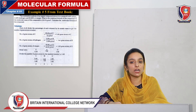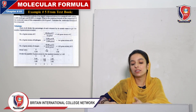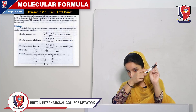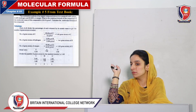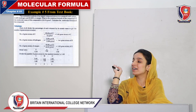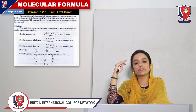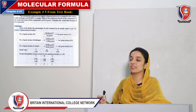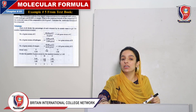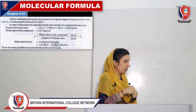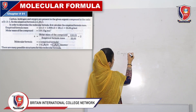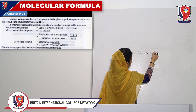Once we have all three gram atom values, we move to step 3: atomic ratio. Carbon gives 5.45, hydrogen gives 5.46, and oxygen gives 1.82 gram atoms. The smallest value is oxygen at 1.82. We divide all three values by 1.82 to get the ratio: 3 : 3 : 1, indicating 3 carbon atoms, 3 hydrogen atoms, and 1 oxygen atom. Now we can determine our empirical formula.